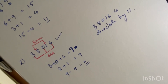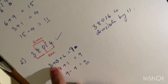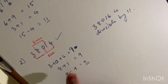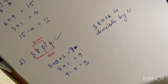To recap: for divisibility by 7, double the last digit and subtract from the rest of the number; if the result is 0 or divisible by 7, the whole number is divisible by 7. For 8, the last three digits must be either 000 or divisible by 8 — divide and check that the remainder is 0. For 11, subtract the sum of even-position digits from the sum of odd-position digits; if the result is 0 or a multiple of 11, the whole number is divisible by 11.